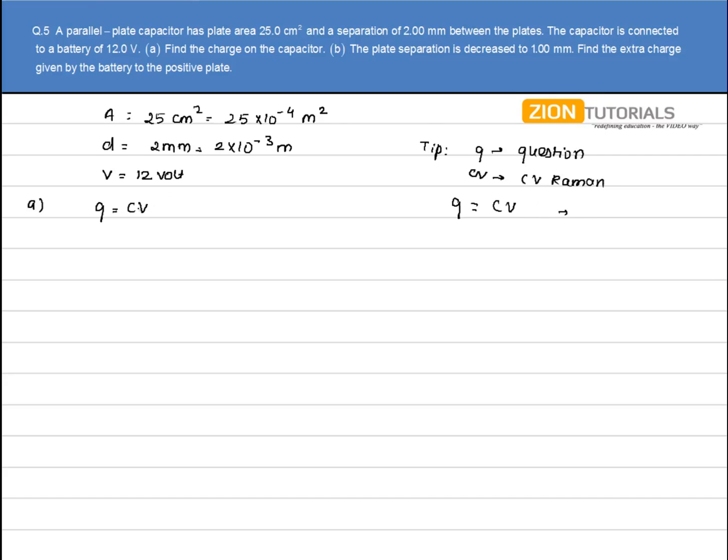Proceeding with the question, to calculate the charge on the capacitor using Q = CV, we first need to calculate the capacitance C. The capacitance is given by ε₀A/d.